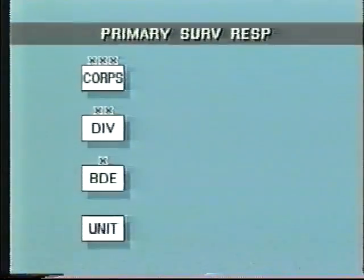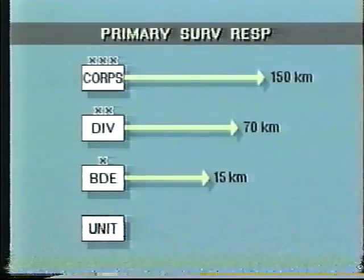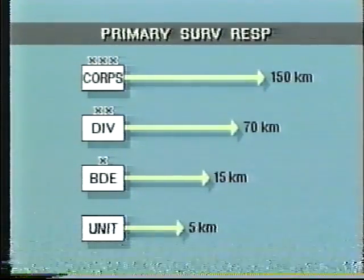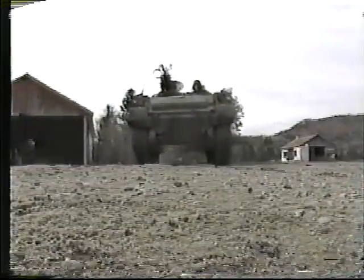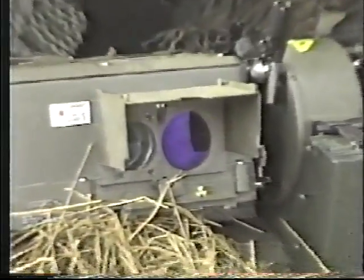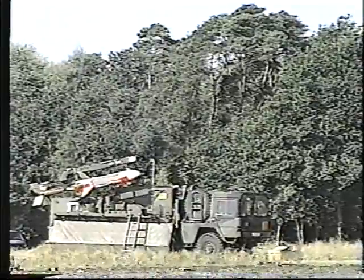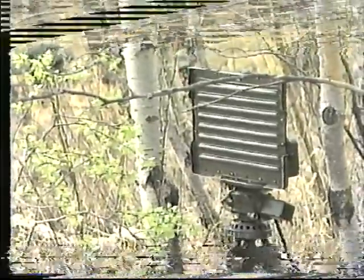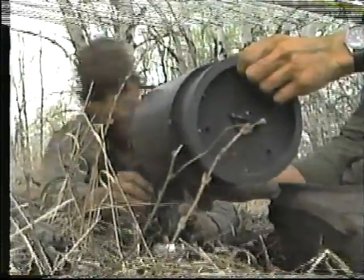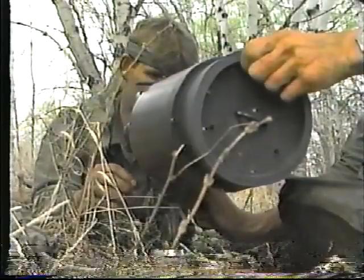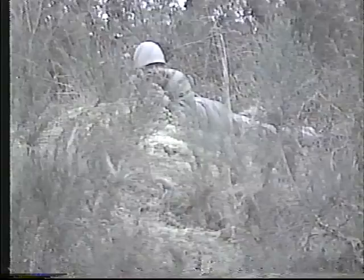Each level of command is responsible for the collection of information within its area of responsibility. The planning process takes into account: the need to constitute a separate surveillance force; areas or locations which require particular surveillance; information provided by higher and adjacent formations; the use of deception to disguise surveillance activities; the allocation of resources; and the core and division's emission control policies, which normally impose restrictions on the use of radars, active infrared sensors and white light, so that the enemy will not be provided with information on our defensive layout.